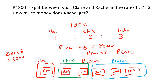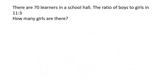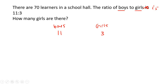Let's do a few more examples to make sure you really understand it. Here we have 70 learners sitting in a school hall. The ratio of boys to girls is eleven to three. So the first number is the boys and the second number is the girls — eleven for boys and three for girls. We can do this with money or people; it doesn't really matter.